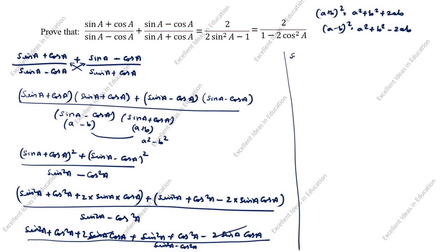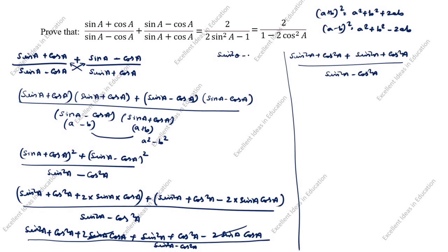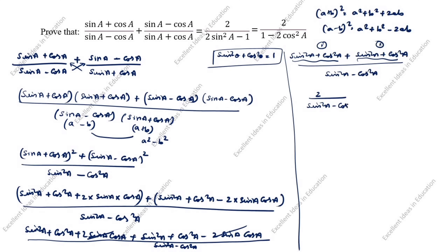Next: sin square a plus cos square a, plus sin square a plus cos square a, divided by sin square a minus cos square a. What is sin square theta plus cos square theta? It equals 1. You see sin square a plus cos square a — this one is 1, and this is also 1. So 1 plus 1 equals 2, giving 2 divided by sin square a minus cos square a.